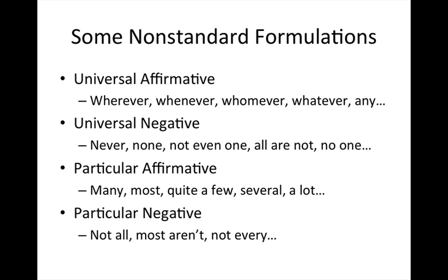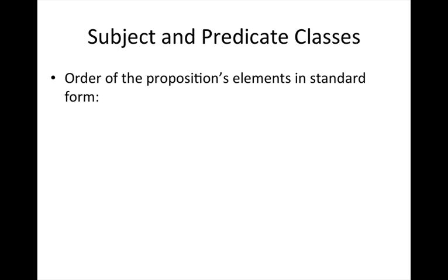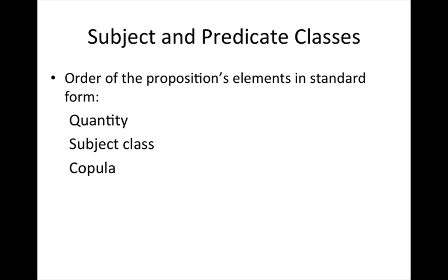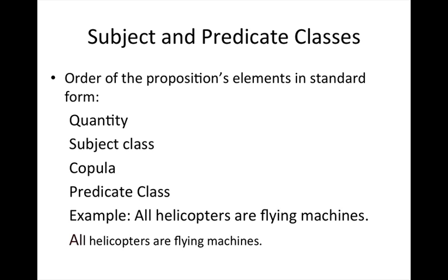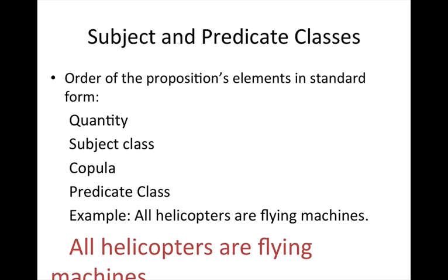Now let's look at the subject and predicate class of a given proposition. The order of the proposition's elements in standard form are: quantity, the subject class, the copula, and the predicate class. Here's an example: 'All helicopters are flying machines.' 'All' is the quantity. 'Helicopters' is the subject class. The copula is the conjugation of the verb 'to be' — in this case the word 'are.' And the predicate class is 'flying machines.'